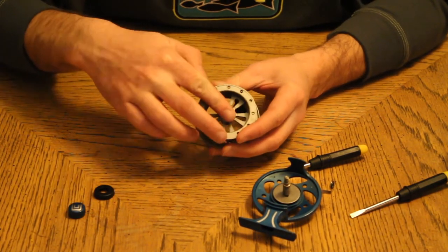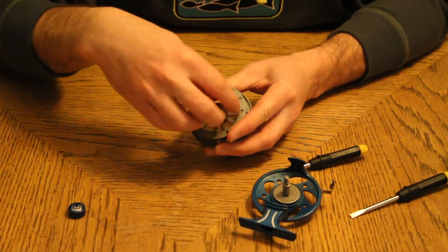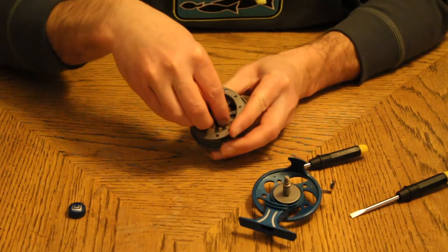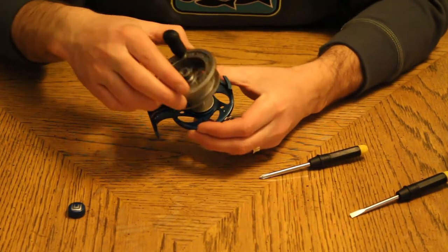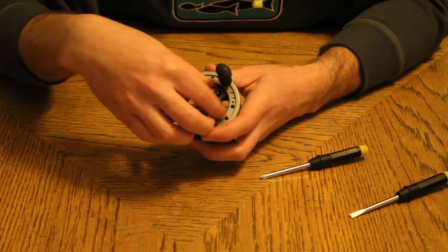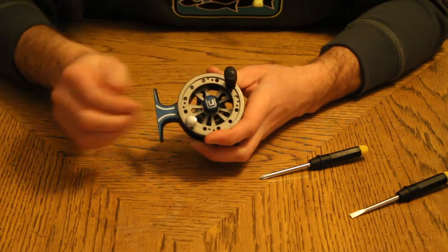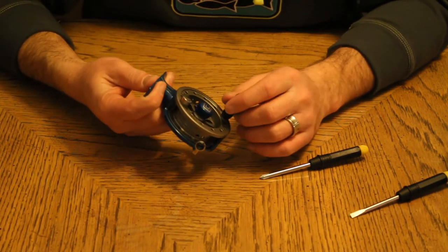So the one way clutch is in. You put the spacer back in, put the black cap on. And now it's ready to go back on the frame and replace your blue cap. And now it's ready for right handed retrieve.